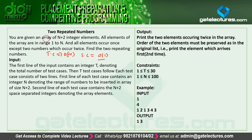What they are saying is: you are given an array of integer elements. All elements in the array are in range from 1 to n, and all elements occur once except two numbers which occur twice.